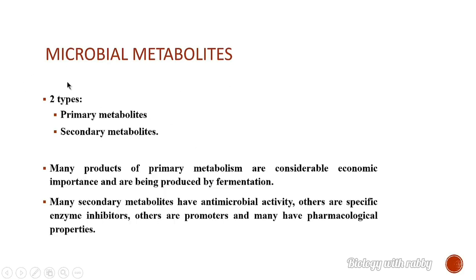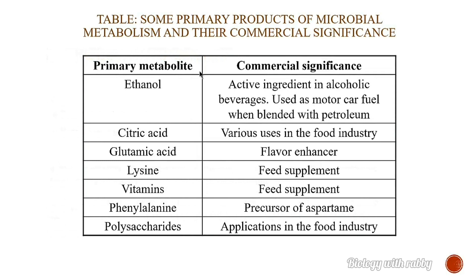Number three is microbial metabolites. There are two types: primary metabolites and secondary metabolites. Fermentation is used to produce many key metabolic products, many of which are of significant economic importance. Numerous secondary metabolites have antimicrobial activity; others are specific enzyme inhibitors, others are promoters, and many have pharmacological properties. Here is a table showing some primary products of microbial metabolism and their commercial significance.